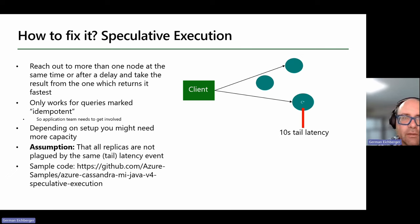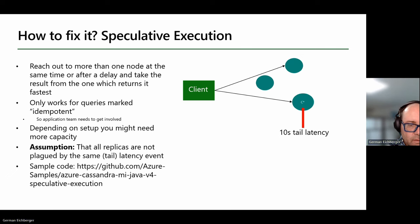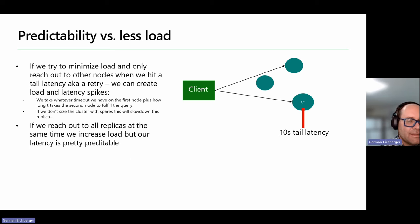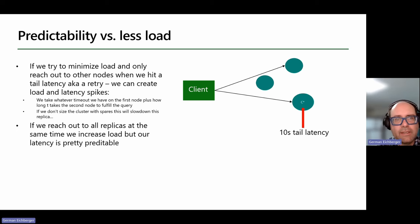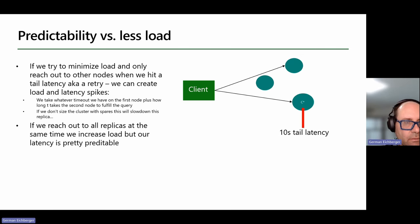The assumption here is that not all replicas are blocked by the same tail latency event, which is usually a good assumption — especially in the cloud where you can spread things between availability zones and regions. We have sample code showing how to use speculative execution, and it's not necessarily Azure-specific, so you can use it in other environments too. Speculative execution trades predictability versus load: reaching out to multiple nodes simultaneously increases cluster load, but because they're not all blocked by the same tail latency event, on average it will be faster.